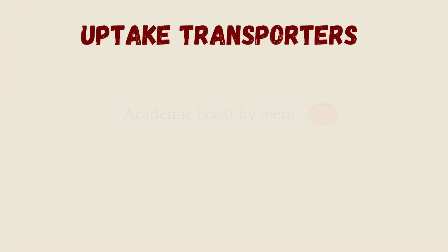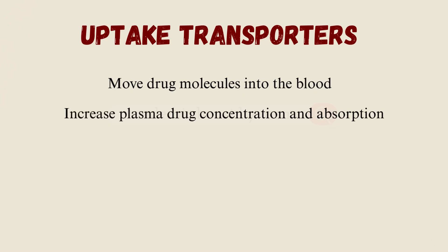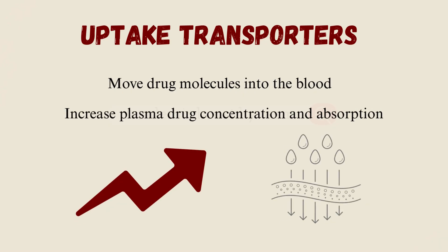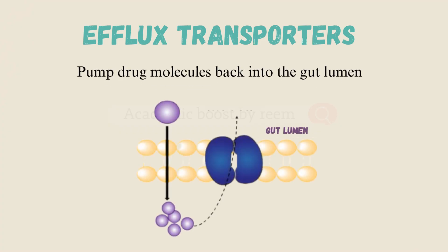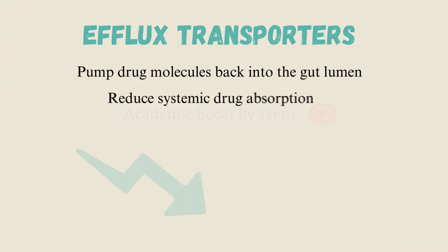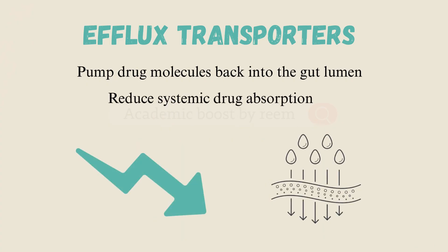These transporters can be classified into uptake and efflux transporters. Uptake transporters move drug molecules into the blood, increasing plasma drug concentration and absorption, while efflux transporters do the opposite — they pump the drug molecule back into the gut lumen, reducing systemic drug absorption.